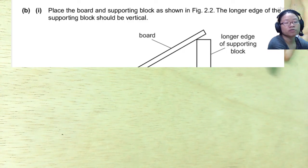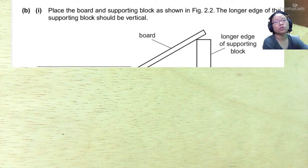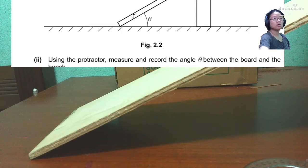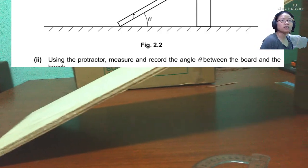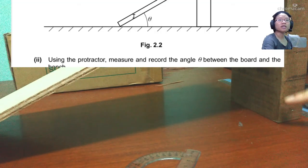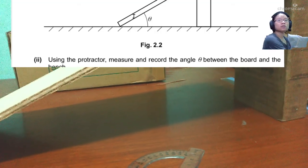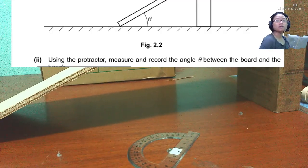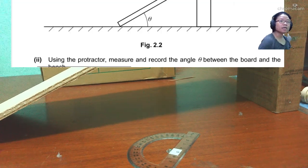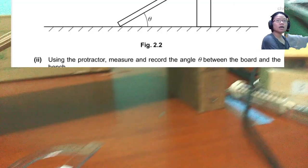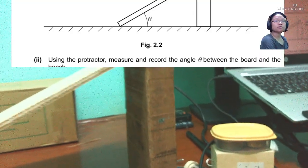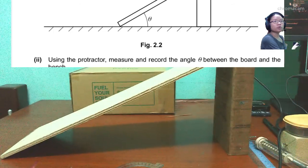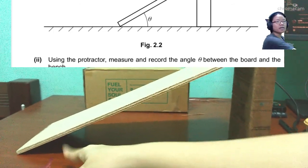And now I'm going to change the angle of the camera because we need to measure theta. Now you can see the board. The vertical higher part is here. Let me pull back my camera so you can see. So the vertical higher part is here. This is the vertical and higher plane. This is your setup. We're going to need to measure this angle theta.